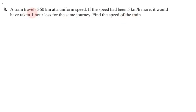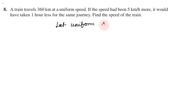If the speed had been 5 km per hour more, the time would be less. Speed and time are inversely proportional. Let the uniform speed of the train be x km per hour.